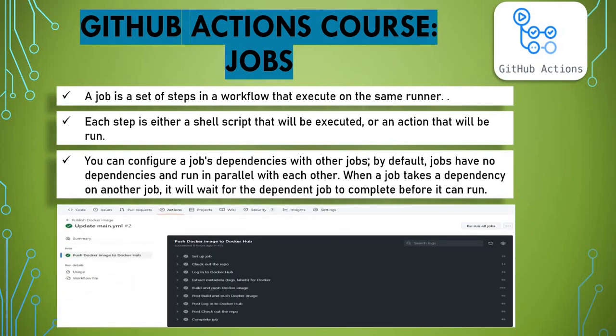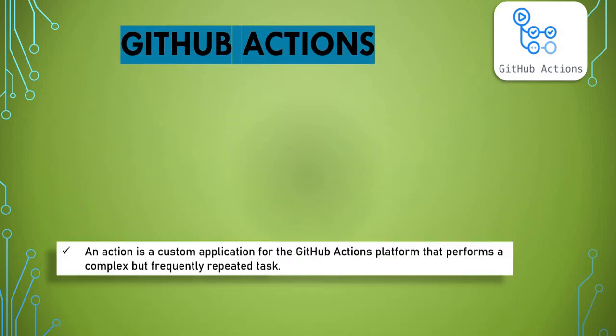For example, steps inside a job might include: set up the job, check out the repository, log into Docker Hub — these steps run serially within the job. When there is a dependency between jobs, they run sequentially; otherwise they can run in parallel. I'll share my GitHub repository link in the video description so you can see all these details.